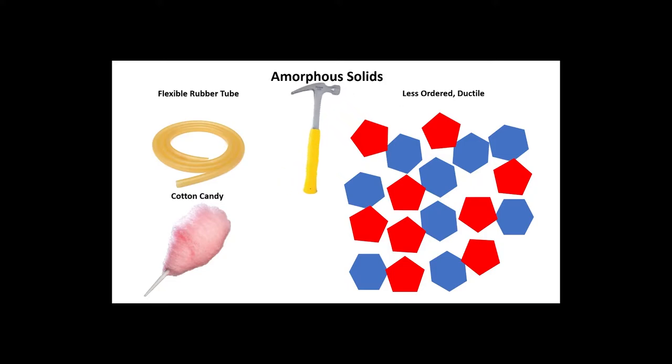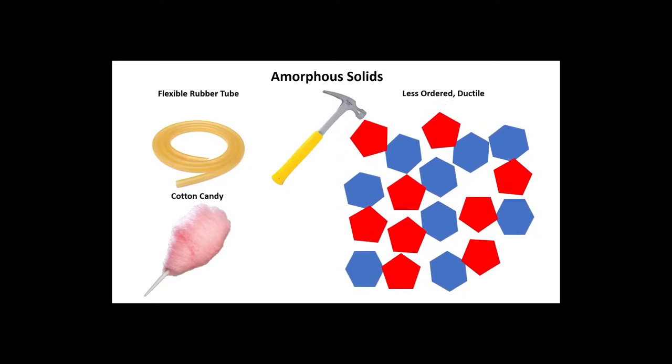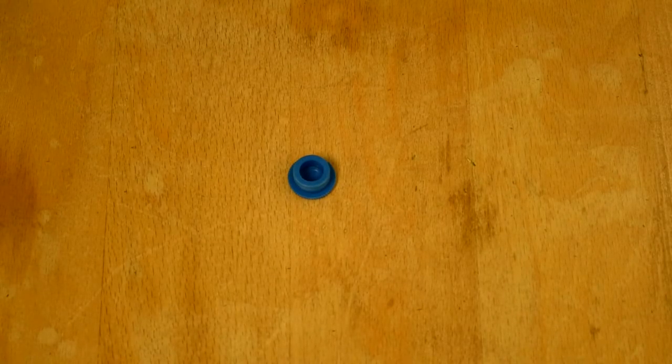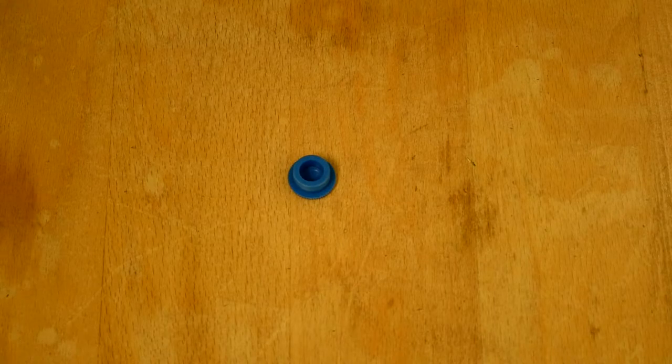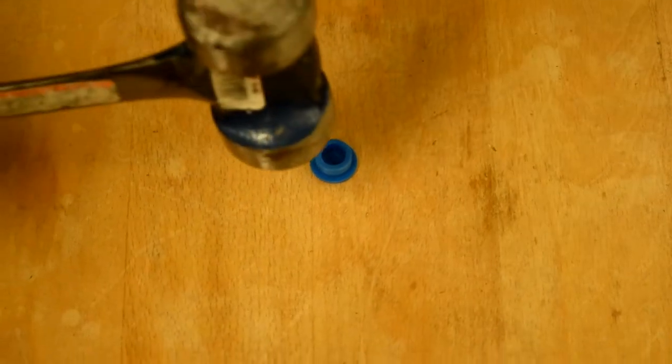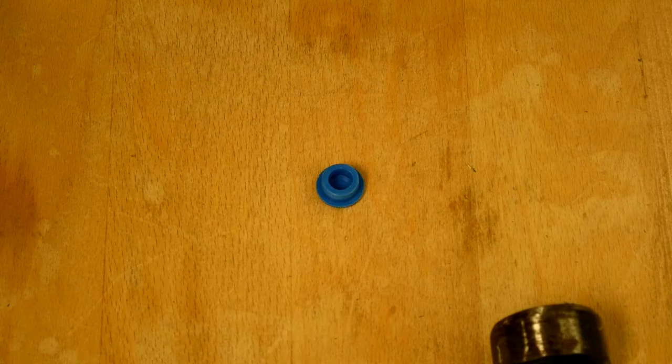When we apply force to something amorphous, it deforms instead of breaking, which is often the case with many plastics. We are going to demonstrate this with a bottle cap at room temperature. Notice how when we hit it with the hammer, it stays intact and slides out from under the pressure, leaving it perceivably undamaged.